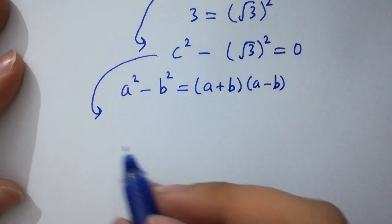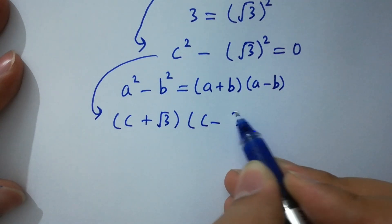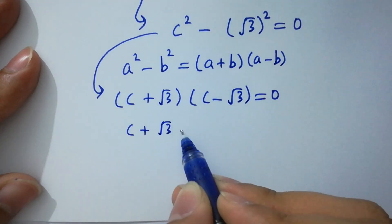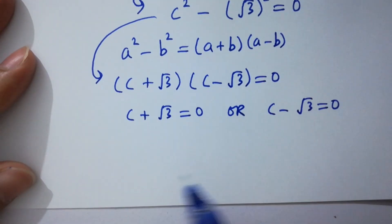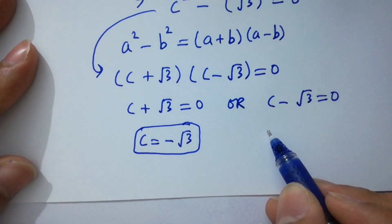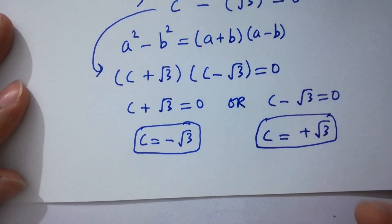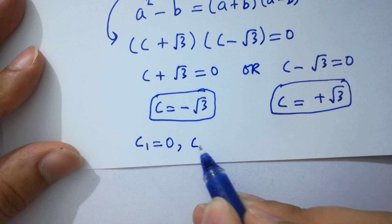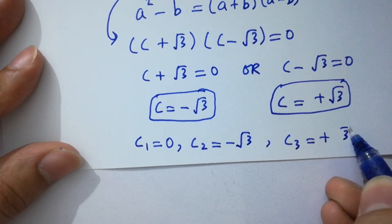We have c plus square root of 3, times c minus square root of 3, equal to 0. So either c plus square root of 3 equals 0, giving c equals minus square root of 3, or c minus square root of 3 equals 0, giving c equals plus square root of 3. So we have three values: c1 equals 0, c2 equals minus square root of 3, and c3 equals plus square root of 3.